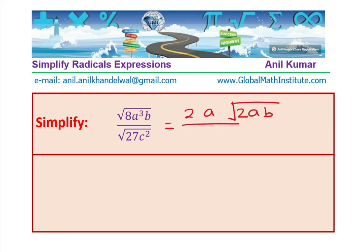a³ can be written as a times a and b was left as such. Correct? And in the denominator, we have 3√3 and absolute value of c. Now, since we have square root 3 here in the denominator, we need to rationalize. It really means multiply and divide by square root 3.